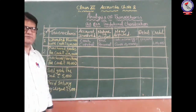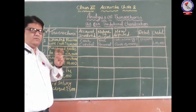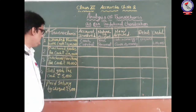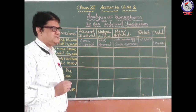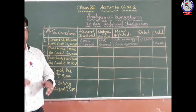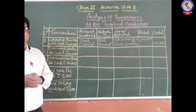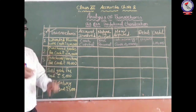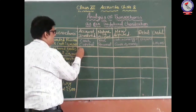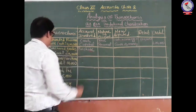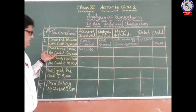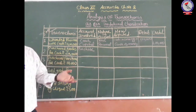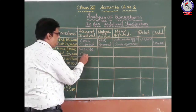The second transaction: purchase goods for cash, 20,000 rupees. Now the two accounts involved: we have purchased goods which we intend to resell, so that transaction is known as purchase — so one account is the purchase account. We have paid cash for those goods, so the other account involved is cash.